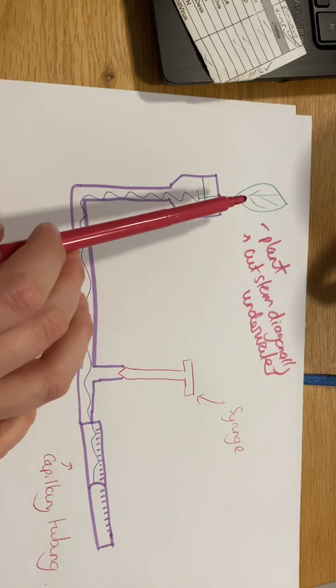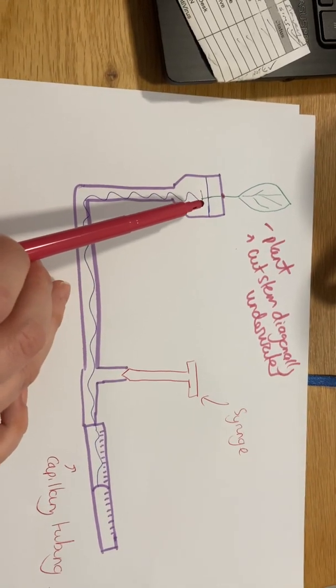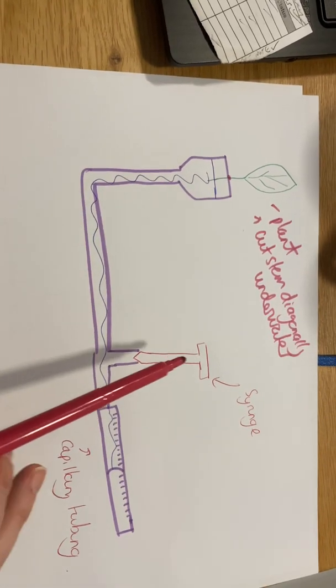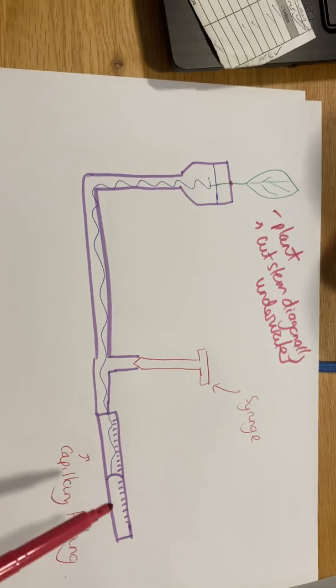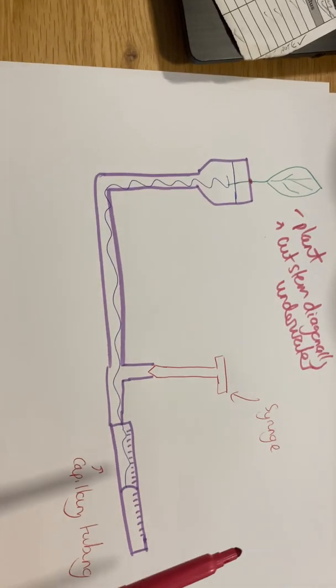You have your plant, and the bottom of the stem that's been cut diagonally is inserted in the water. There's a series of pipes, it's connected to a syringe, and at the end we've got our capillary tubing. All of this is airtight and set up underwater to prevent any air bubbles getting into it.